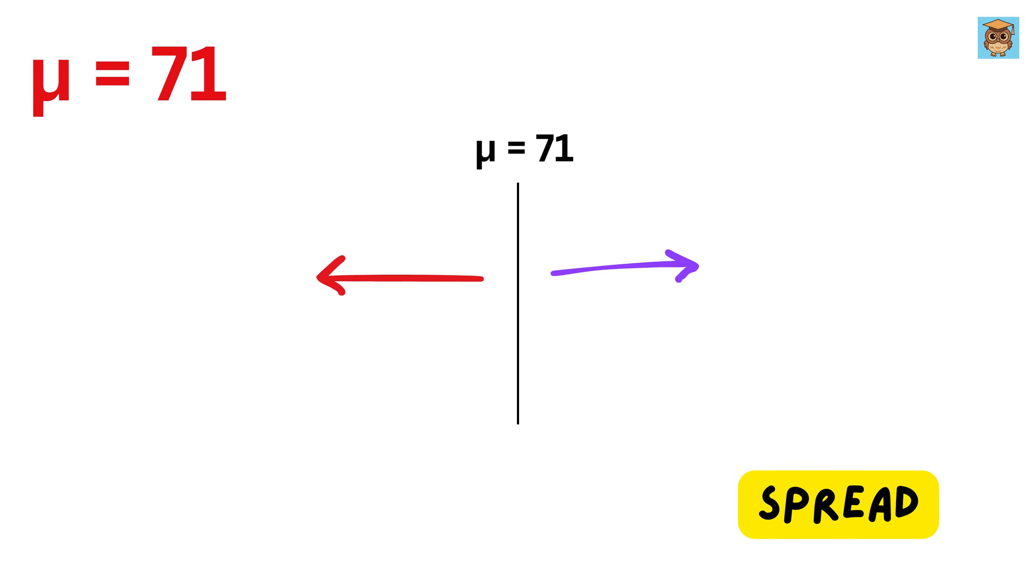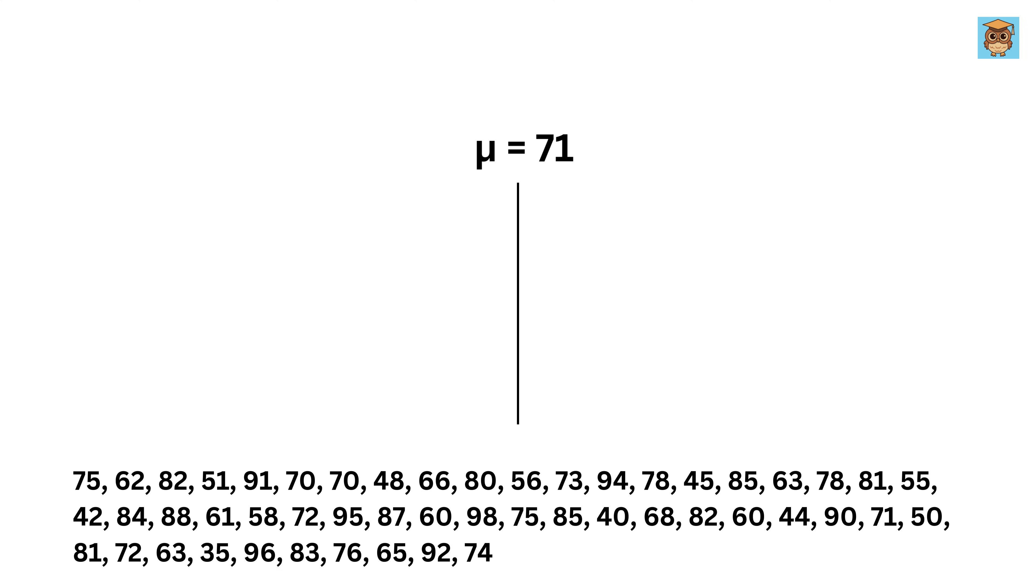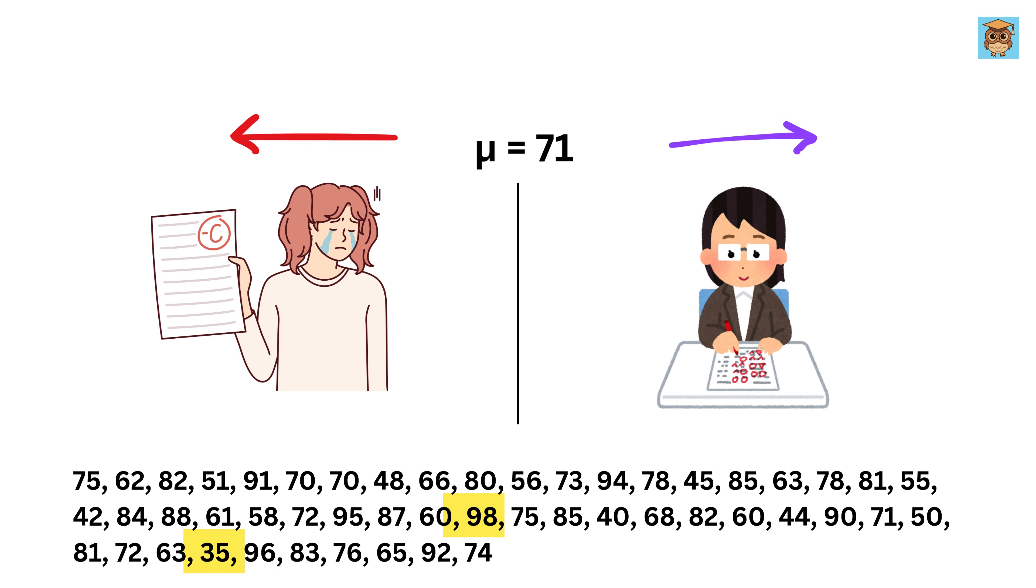If every student scored exactly 71, then the marks would be perfectly centered, with no spread at all. But in reality, some students scored much lower, like 35, while others scored much higher, like 98. To measure this spread, we use something known as standard deviation. This tells us whether most students scored close to 71 or whether the scores are widely spread out. We use this symbol σ, which is called sigma, to represent standard deviation. But how do we calculate it?